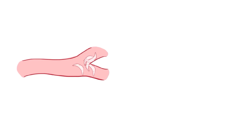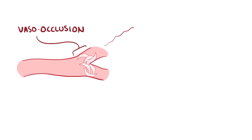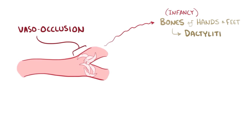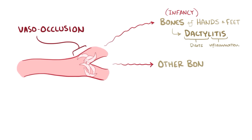In sickled form, red blood cells tend to get stuck in capillaries, called vasoocclusion. Starting in infancy, they can clog up blood flow in the bones of the hands and the feet, causing dactylitis, or swelling and pain of the digits. Later they can get stuck in other bones, causing a sickle cell pain crisis, or avascular necrosis of the bone.